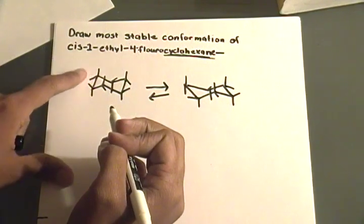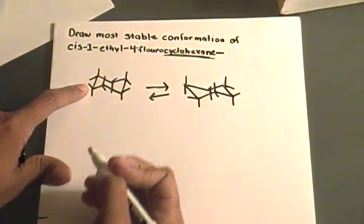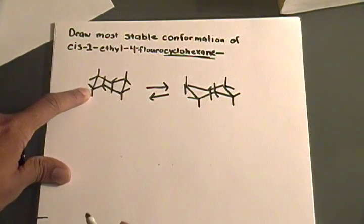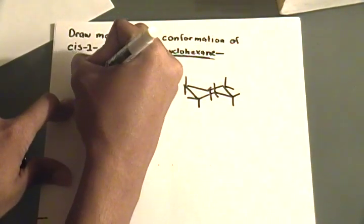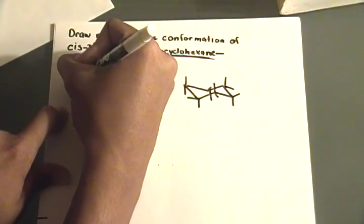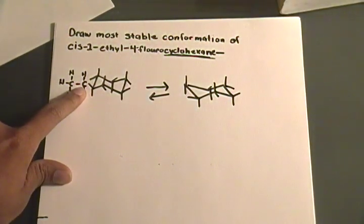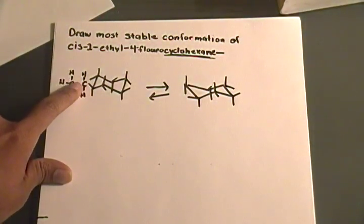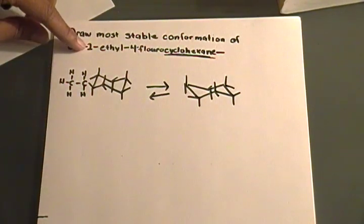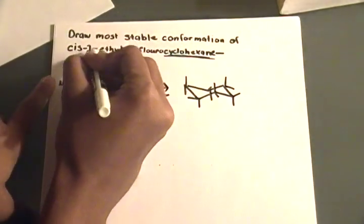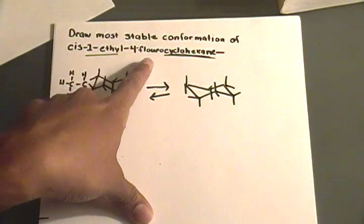So cis-1-ethyl, my 1-ethyl is going to go right here on this equatorial up position on this carbon. So this is going to be my number one carbon. And I will put this ethyl CH2CH3, that's my ethyl. It's equatorial going up, equatorial up, and the other position is axial going down. So now since that's my number one ethyl, I have to see, this is done right here, one ethyl is done.